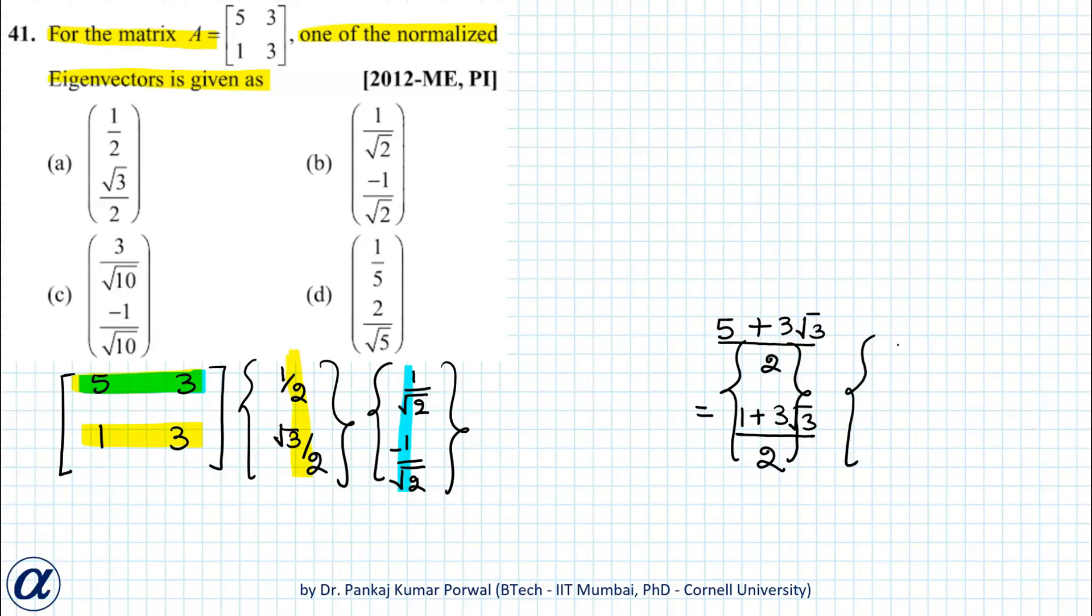I get 2 by root 2, and if I multiply this row with this vector, I get minus 2 by root 2. And here if we note this vector and this vector scale with a scalar multiple of lambda equals to 2.